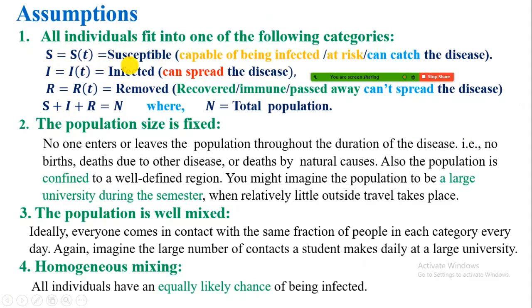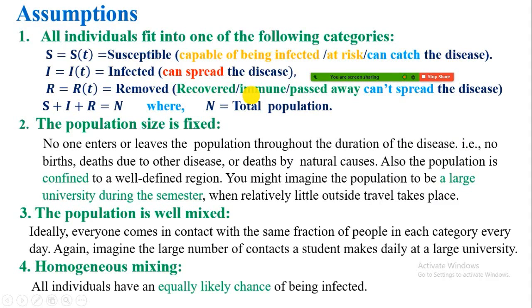S(t) represents susceptibles — individuals who are capable of being infected, at risk of catching the disease whenever they interact with infected people. I represents the infected population — those who are already sick and can spread the disease to susceptibles. R(t) is the removed category — people who have recovered, passed away, or have permanent immunity — and individuals in this category cannot spread the disease.